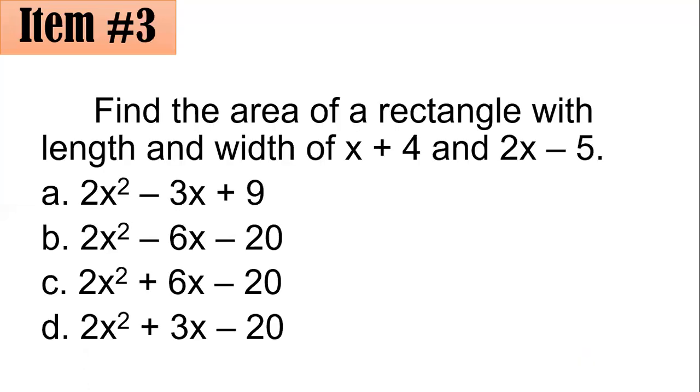Find the area of a rectangle with length and width of x plus 4 and 2x minus 5. Which of these is correct? Is it A, B, C, or D? We will see.